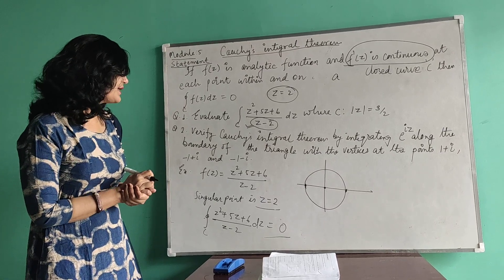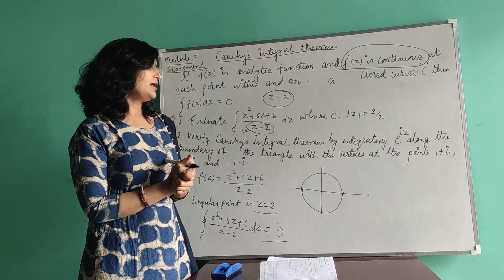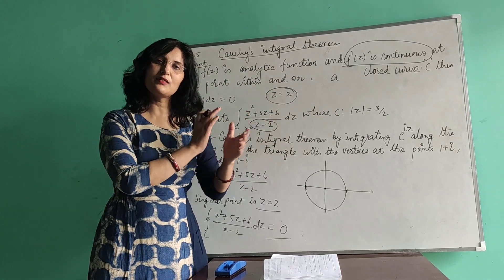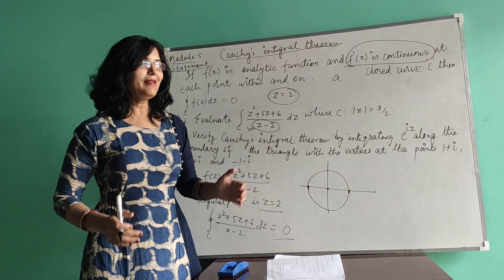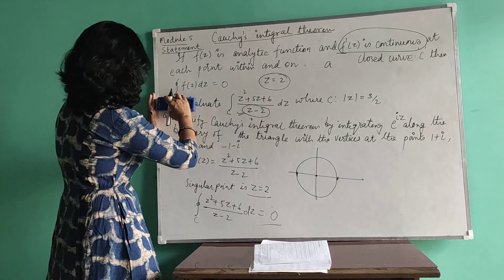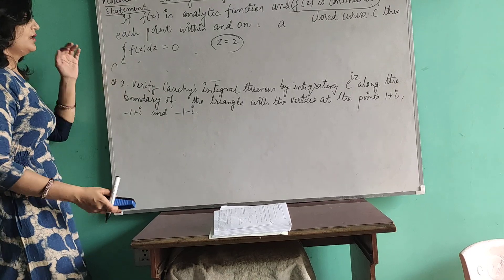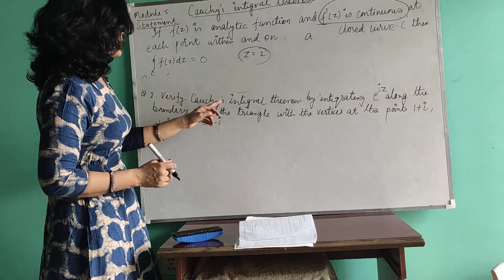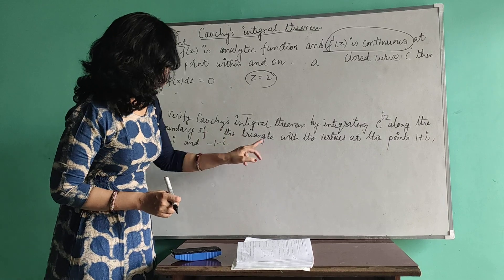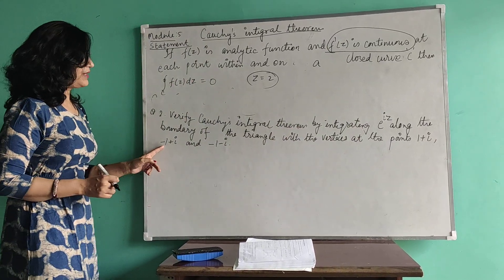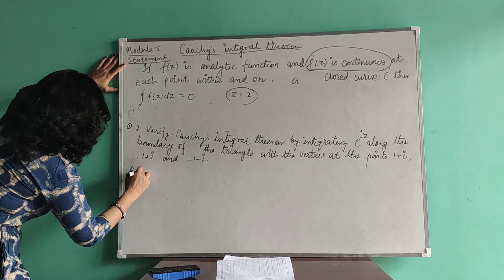We have another example: verify Cauchy's Integral Theorem by integrating e^(iz) along the boundary of the triangle with vertices at 1+i, -1+i, and -1-i. Whenever verification is asked, you have to find LHS and RHS — first apply the theorem, then integrate along the curve and prove both are equal.